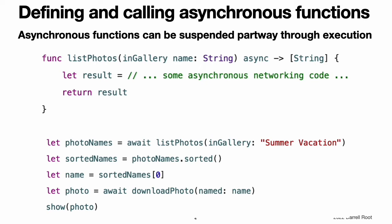Defining and calling asynchronous functions. An asynchronous function or asynchronous method is a special kind of function or method that can be suspended while it is partway through execution. This is in contrast to ordinary synchronous functions and methods, which either run to completion, throw an error, or never return. To indicate that a function or method is asynchronous, you write the async keyword in its declaration after its parentheses, similar to how you use throws to mark a throwing function.